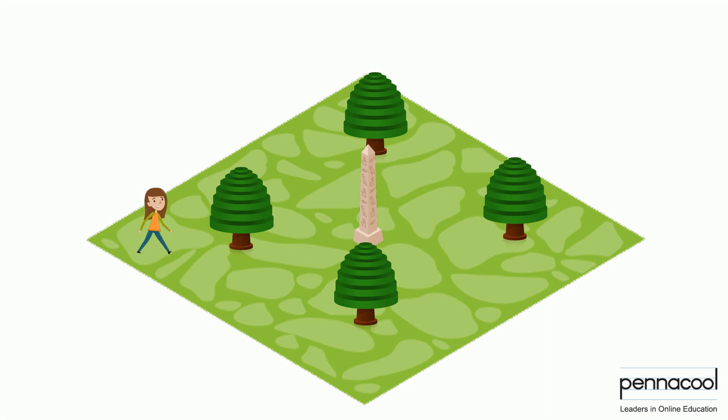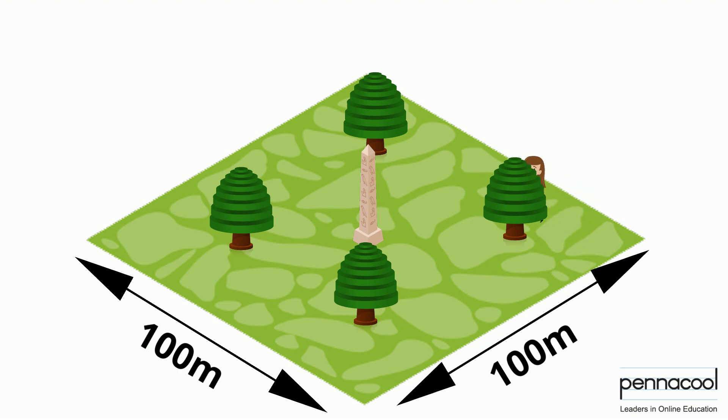Sonia is walking around Memorial Park, which is a square. She wants to know the distance around the entire park if the length from corner to corner is 100 meters. She proceeds to walk from corner to corner four times, completing the distance around the park.